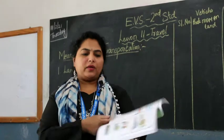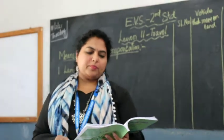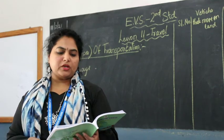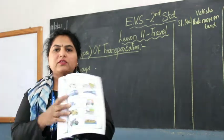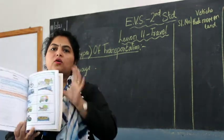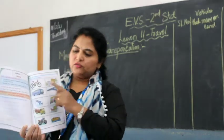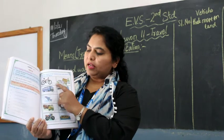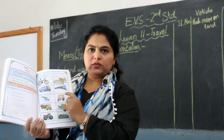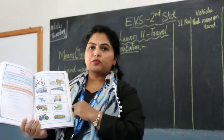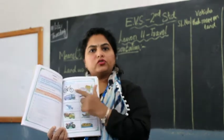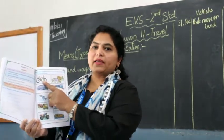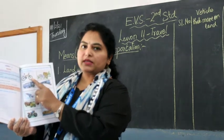Next: write the names of the vehicles in the boxes given below the pictures. They've given different pictures of different vehicles and you'll have to identify each vehicle and write the answer in the box. I will write and send the photo, but I also want you all to guess. The first one is a bicycle.